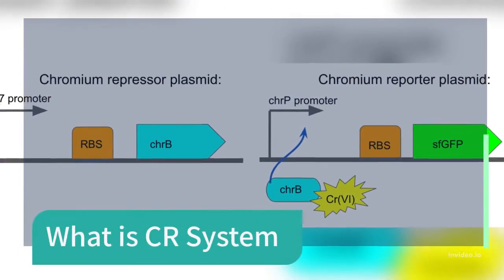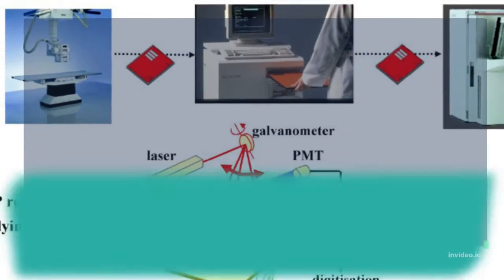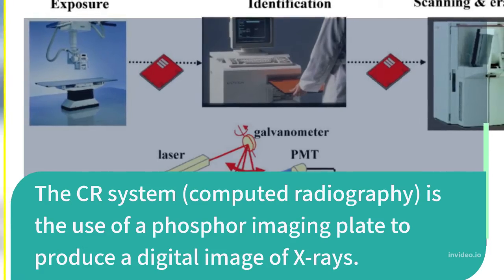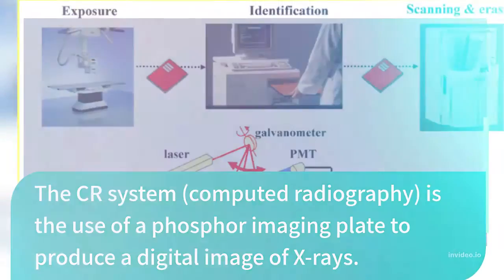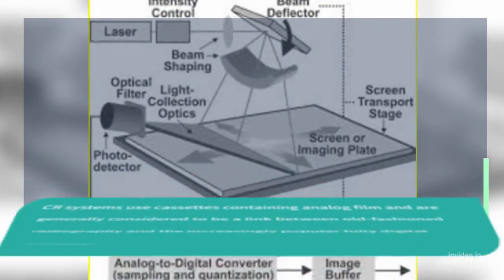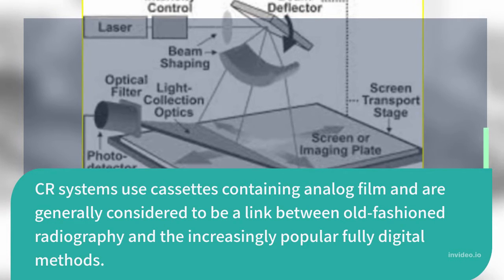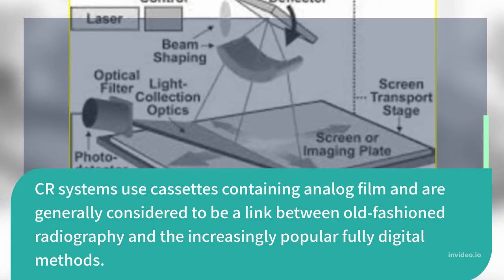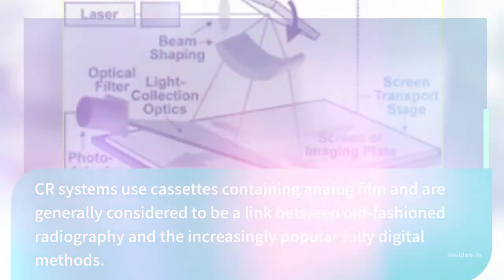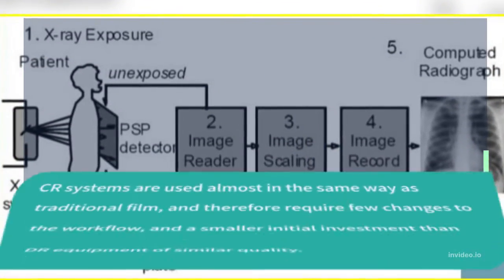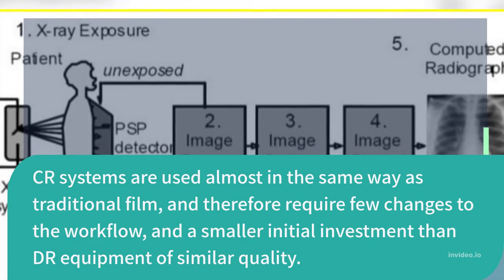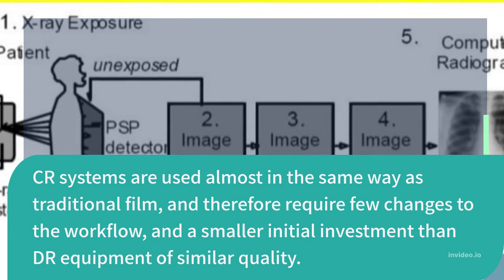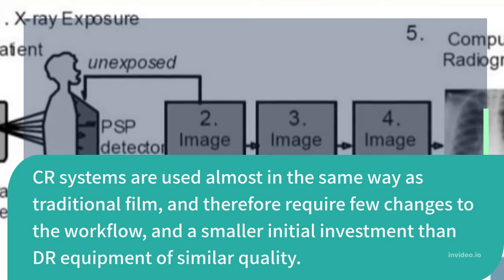What is a CR system? The CR system — computed radiography — is the use of a phosphor imaging plate to produce a digital image of X-rays. CR systems use cassettes containing analog film and are generally considered to be a link between old-fashioned radiography and the increasingly popular fully digital methods. CR systems are used almost in the same way as traditional film, therefore requiring few changes to the workflow and a smaller initial investment than DR equipment of similar quality.